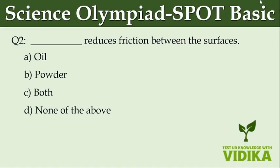Dash reduces friction between the surfaces. Option A, oil. Option B, powder. Option C, both. Option D, none of the above.